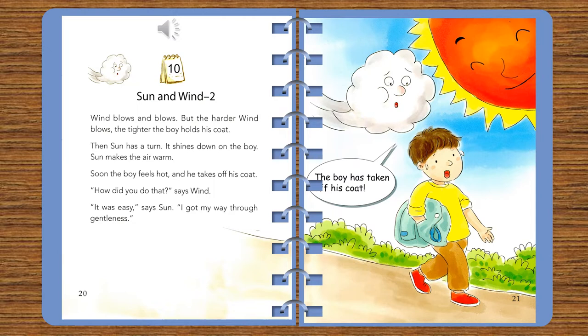Then sun has a turn. It shines down on the boy. Sun makes the air warm. Soon the boy feels hot and he takes off his coat.